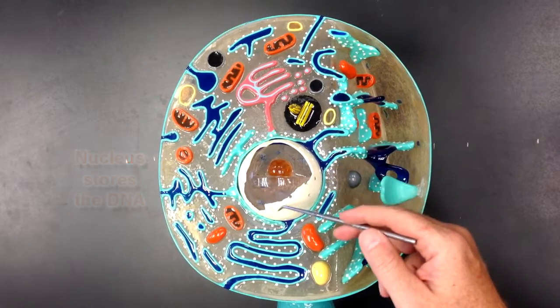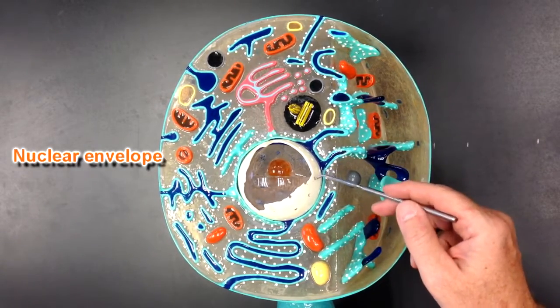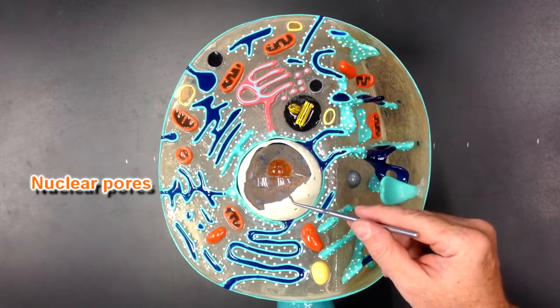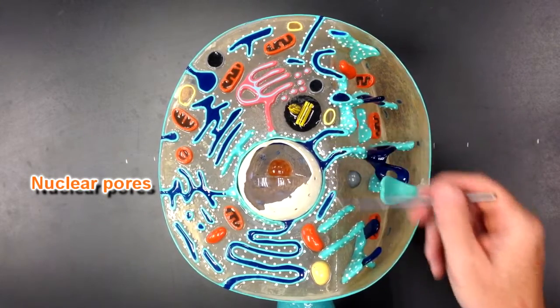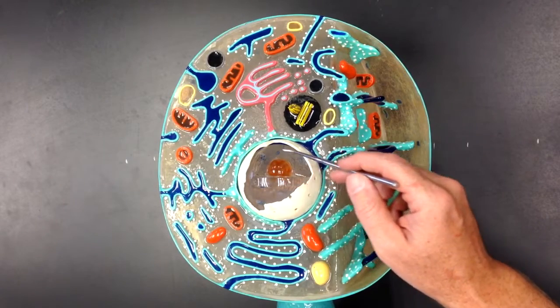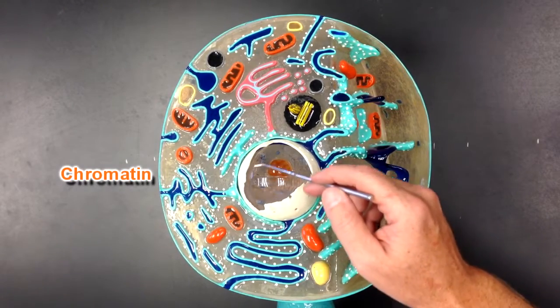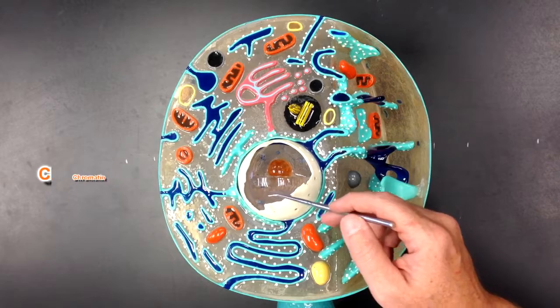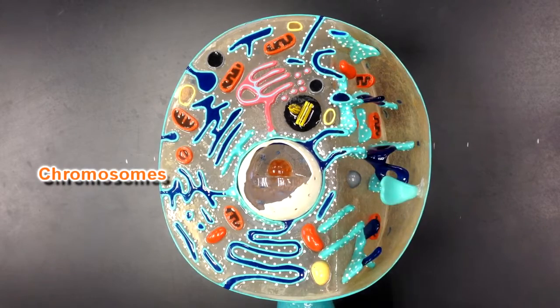This white structure here is the nuclear envelope and you can see the nuclear pores, little holes in the nuclear envelope. Inside is where you have the genetic material, the chromatins in here that condenses into chromosomes and that's where the genes are located.